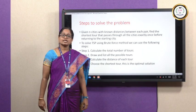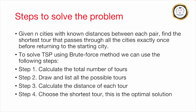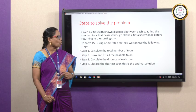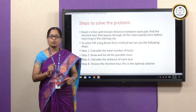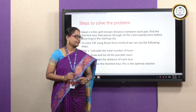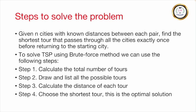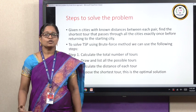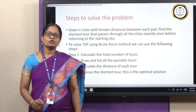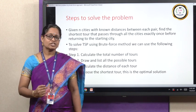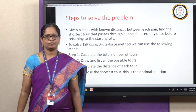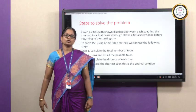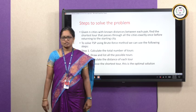Now let us see the steps required to solve the problem. There are n cities with known distances between each pair. Our objective is to find the shortest tour that passes through all the cities exactly once before returning to the starting city. The brute force approach tries to solve the problem by iterating each and every possibility of the solution — first we list out all possible solutions and then find the optimal one.